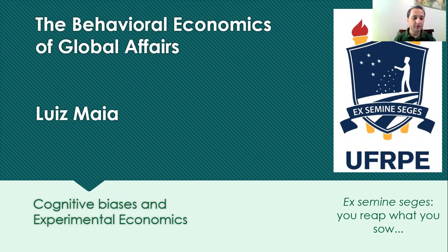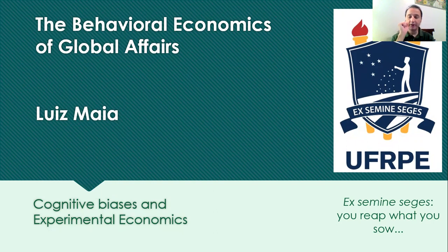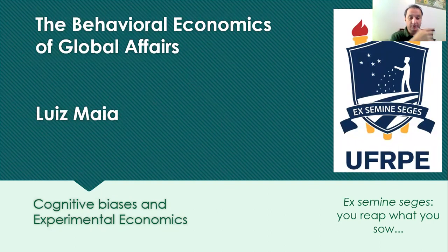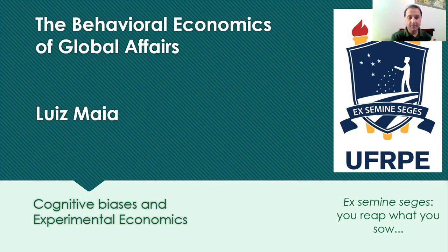Today we're going to talk about cognitive biases. We have already started talking about those in our last class. But today we're also going to talk about how these researchers — some of them psychologists, most of them psychologists — how they came up with these cognitive biases and through which procedures they could establish those as scientific facts.